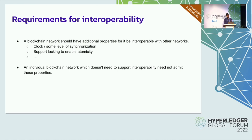For interoperability specifically, a particular ledger would need properties beyond what it would need if it were not to support interoperability. It would need some level of synchronization — a kind of clock and some guarantees with respect to that clock — so that interoperability with another network is feasible. The second thing is that it needs to support locking to enable atomicity across ledgers. These are the fundamental properties we tried to capture in our formal definition.